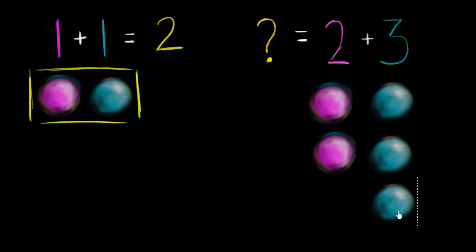So how many total circles do we now have? Well, we could count them. We have one, two, three, four, five circles.